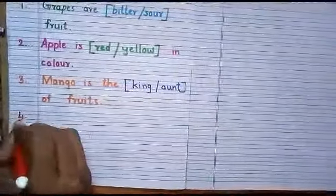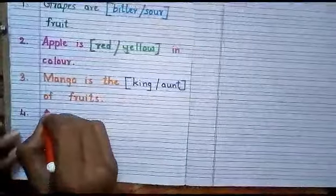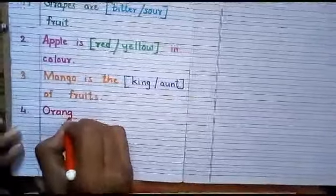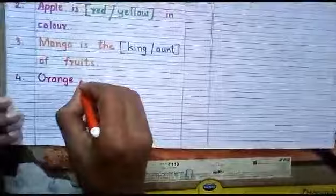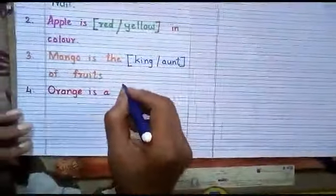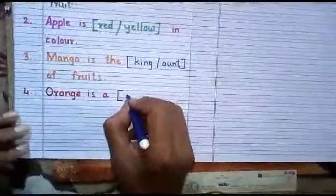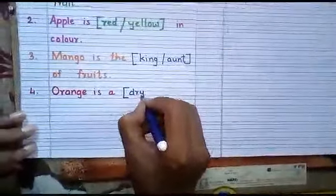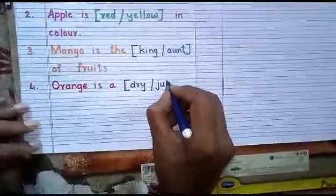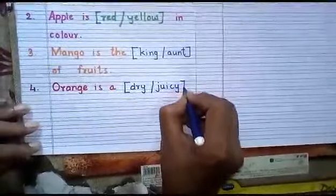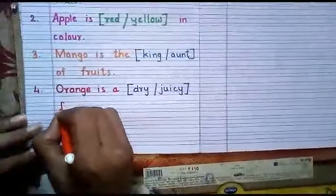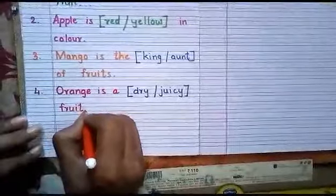Number 4. Orange. O-R-A-N-G-E. Orange is a bracket dry, D-R-Y, or juicy, J-U-I-C-Y, fruit. F-R-U-I-T. Fruit.